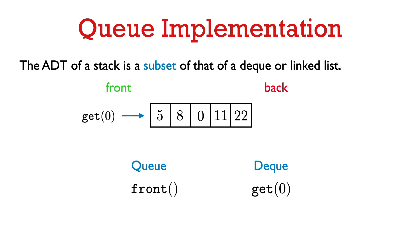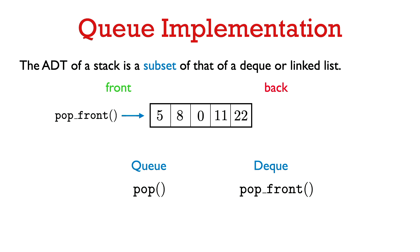If we want to get the front element of a queue, that's like getting the element with index 0 in a deque. And if we want to remove the front element of the queue — the pop function — that's analogous to pop_front in a deque.